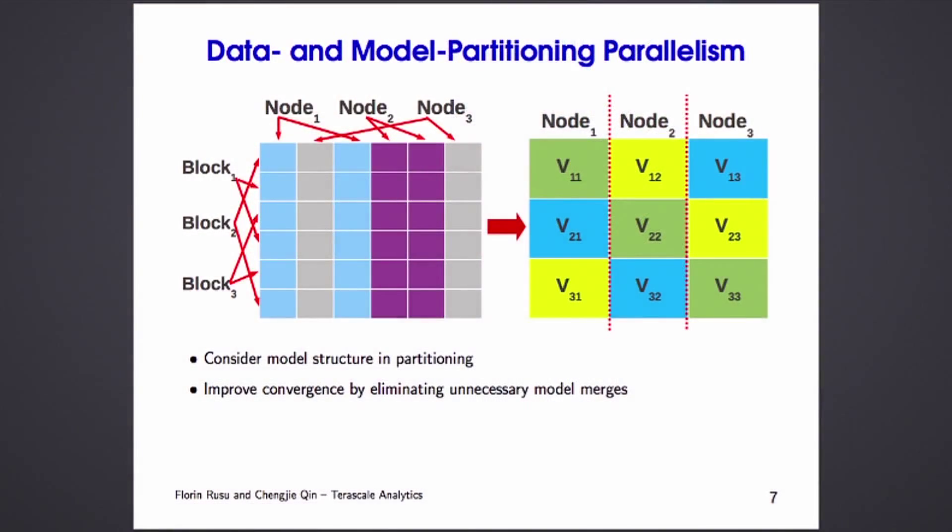Another thing that you can also borrow from the database is model parallelism in addition to data parallelism. This is a very important problem in lower rank matrix factorization, where you can avoid the unnecessary merging of models by correctly splitting the data.